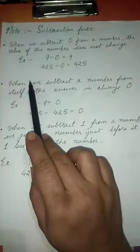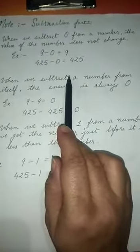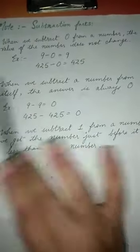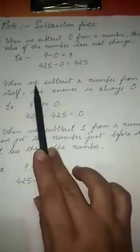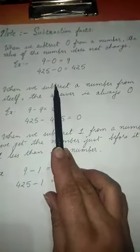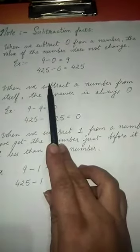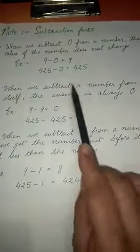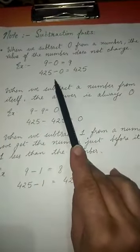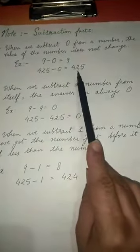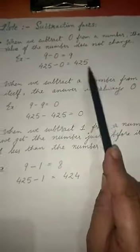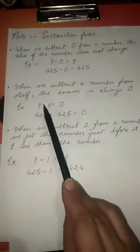Now here are some subtraction facts. Fact number 1: when we subtract 0 from a number, the value of the number does not change — it remains the same. For example, if we subtract 0 from 9, the value does not change; it remains 9. Similarly, 425 minus 0 gives the same number, 425.